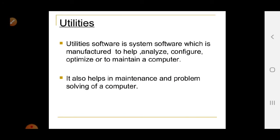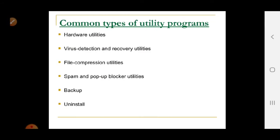Utility software is a type of system software manufactured to help analyze, configure, optimize, or maintain a computer. It also helps in maintenance and problem solving. Common types of utility programs include hardware utilities, virus detection and recovery utilities, file compression utilities, pop-up blockers, backup utilities, and uninstall utilities.